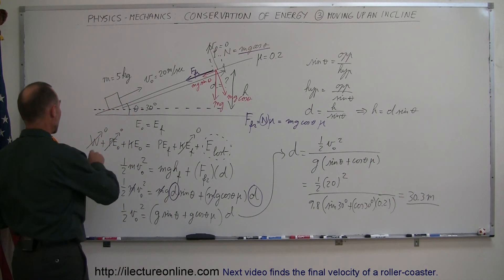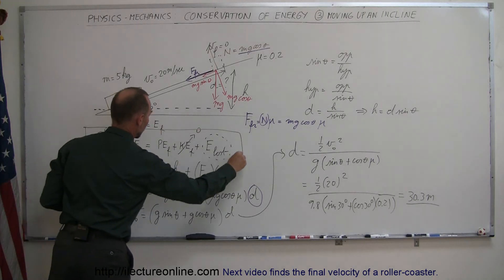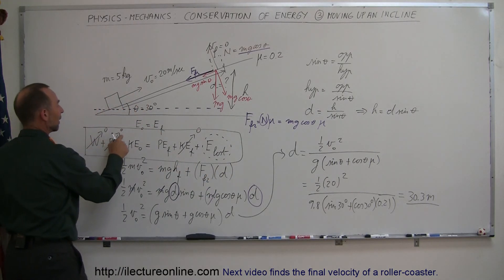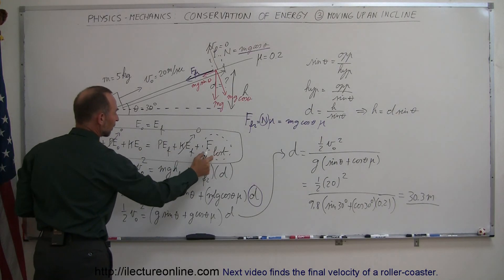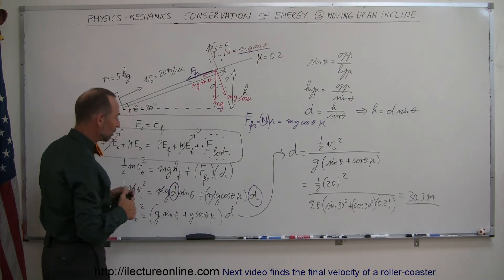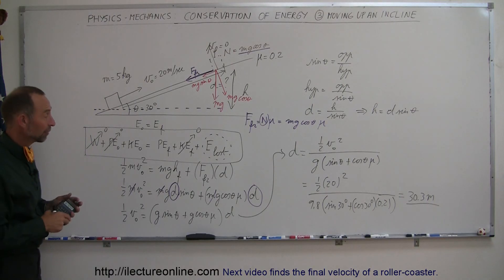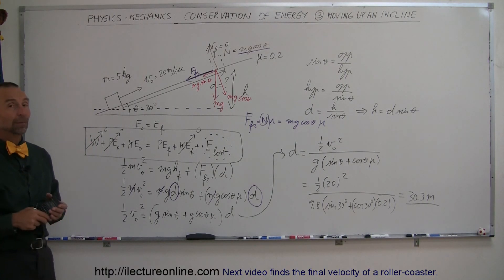But again, start out with the basic equation. Figure out what's not there, what's equal to 0. You're left with the three terms right there. Plug in the equations for each of those three and then solve for the unknown variable. That's how you do a problem like that.